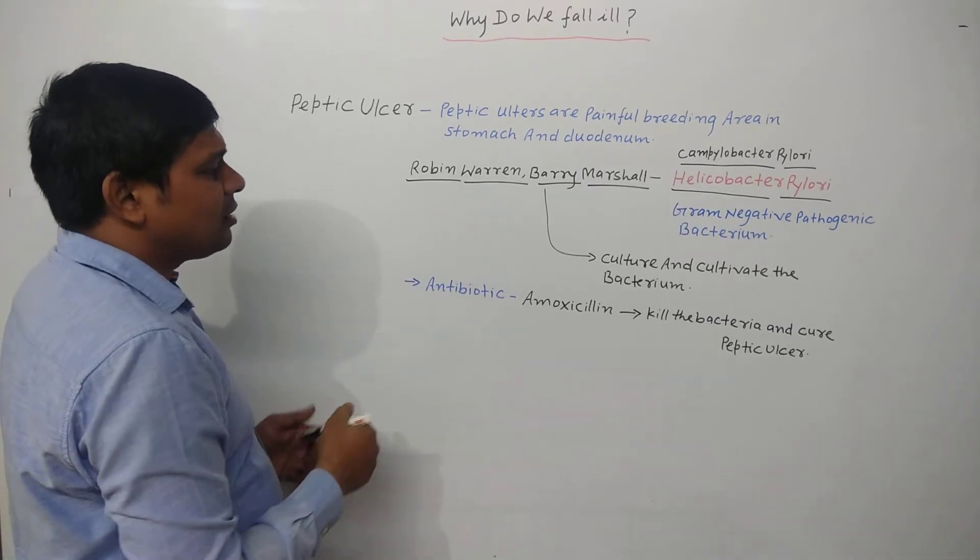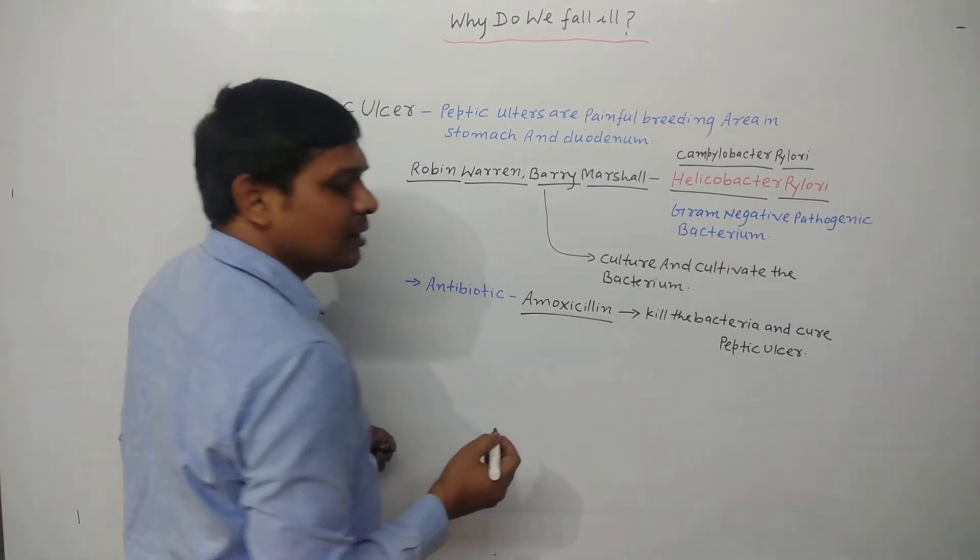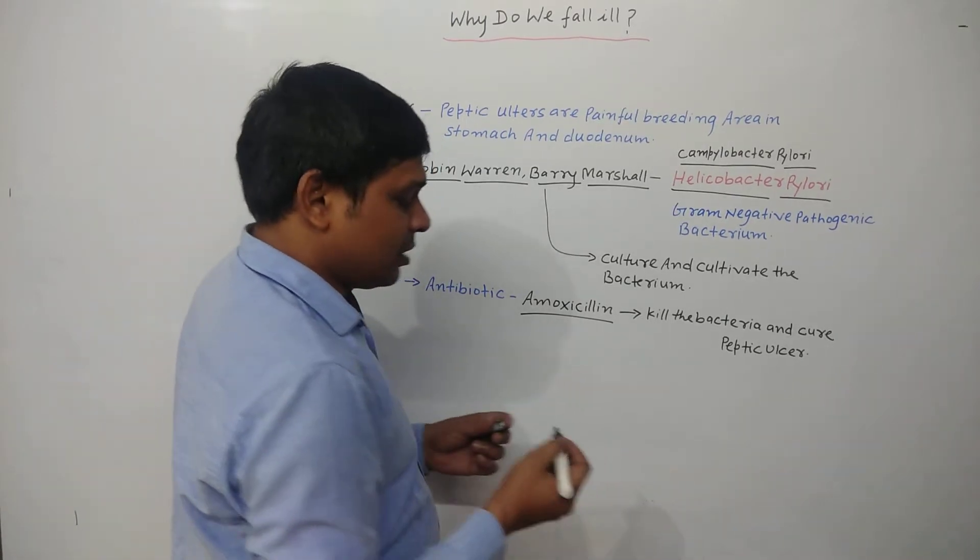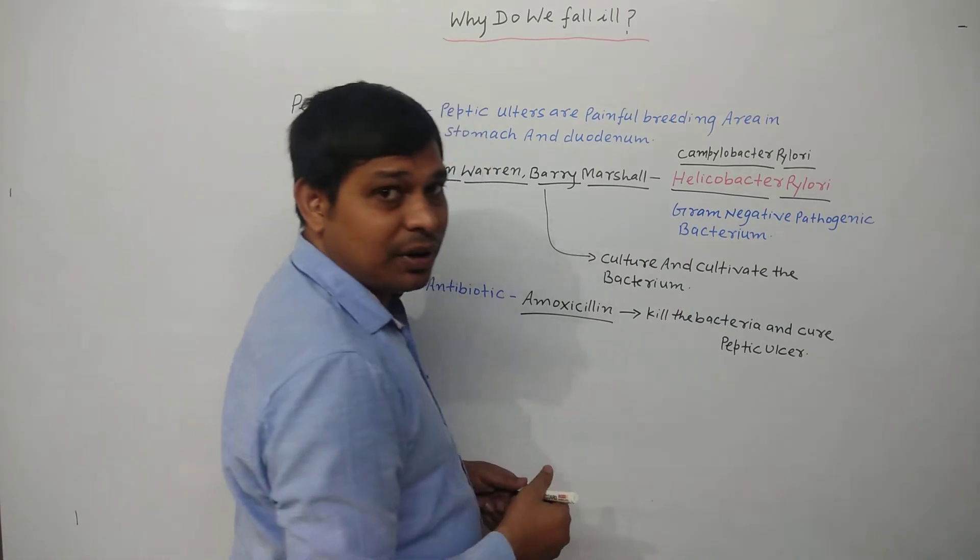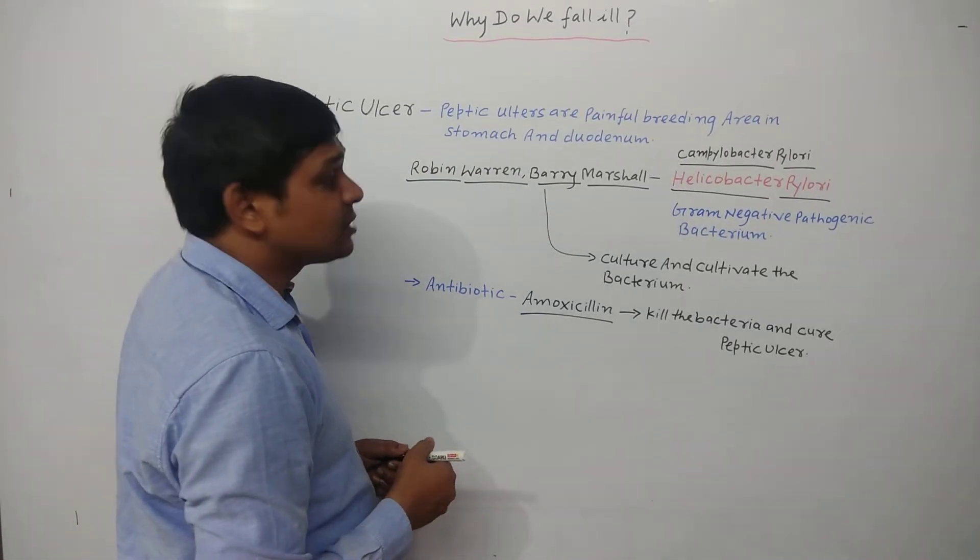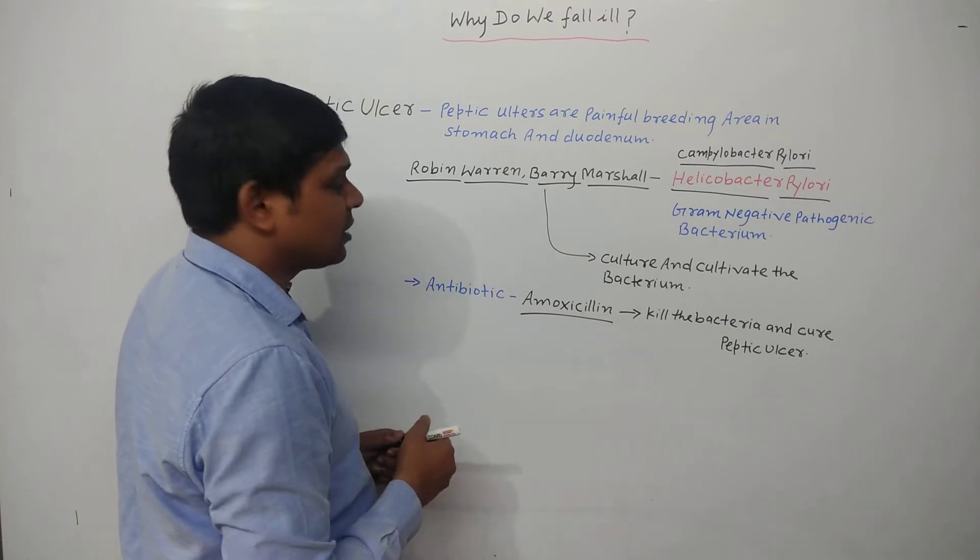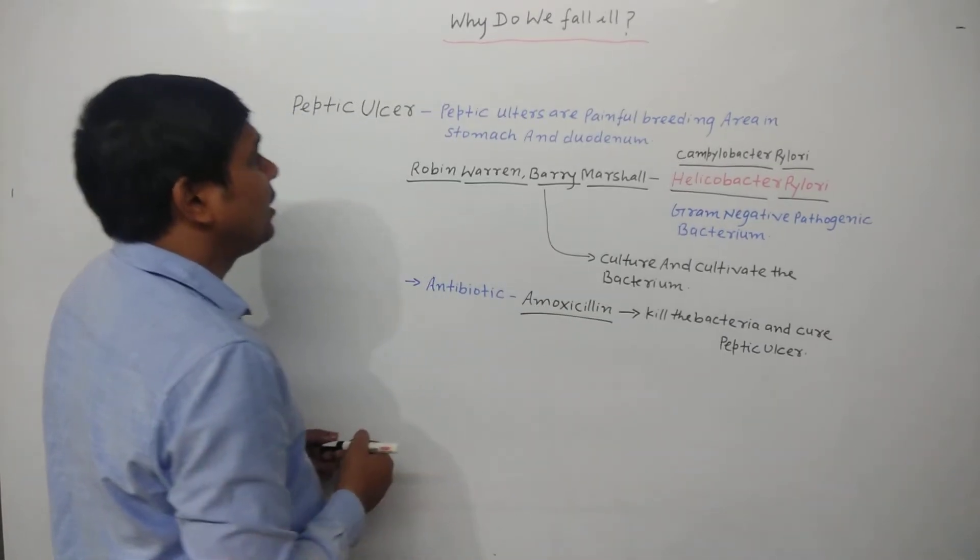They found that an antibiotic, amoxicillin, is capable of killing this bacteria and curing the peptic ulcer. So the antibiotic which we use to kill this bacteria and cure this peptic ulcer is amoxicillin.